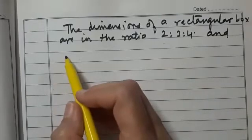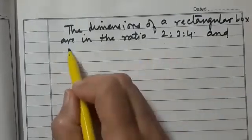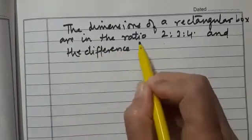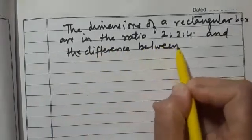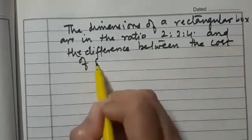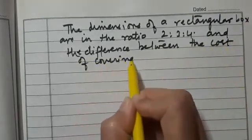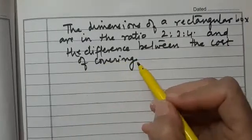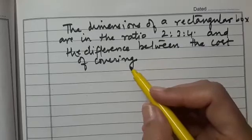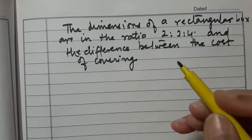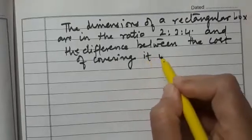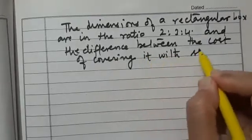Another thing given is the difference between the cost of covering. When it says cost of covering, that means we are thinking about the surface area. So the cost of covering it with sheet of paper.